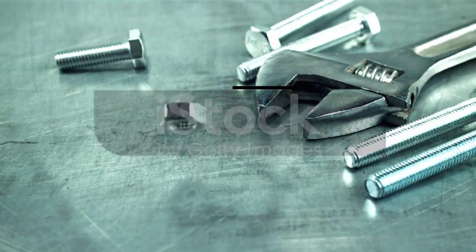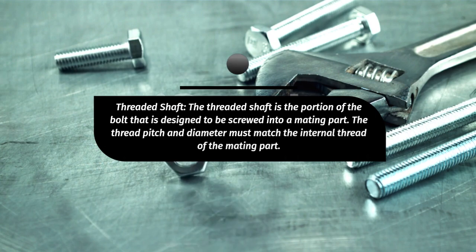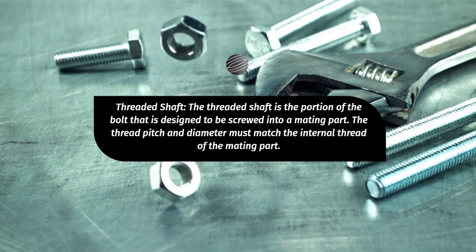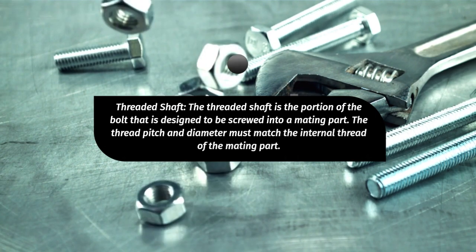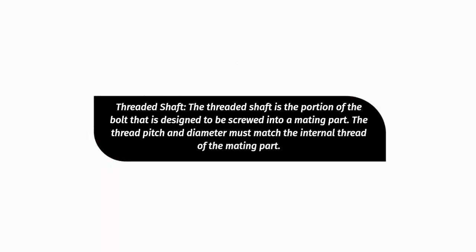Threaded Shaft: The threaded shaft is the portion of the bolt that is designed to be screwed into a mating part. The thread pitch and diameter must match the internal thread of the mating part.